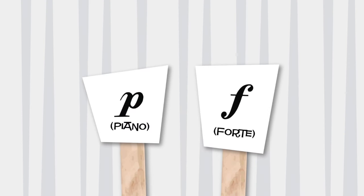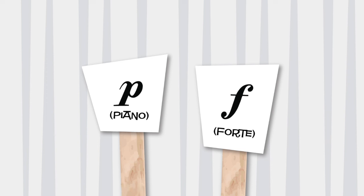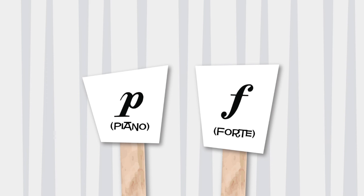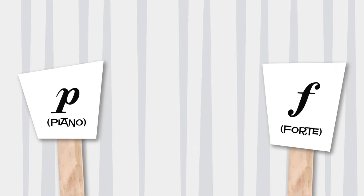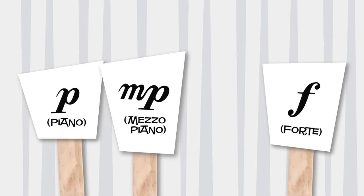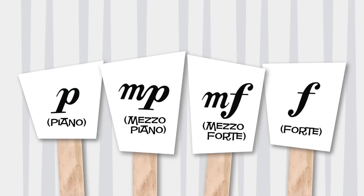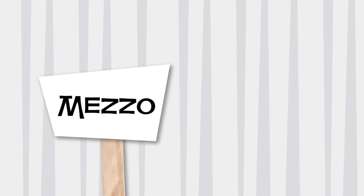Italian music composers also created dynamic symbols that are in between piano and forte: mezzo piano and mezzo forte. The Italian word mezzo means medium. Mezzo is spelled with two Zs, but the first one sounds like a T, just like it does in the word pizza.